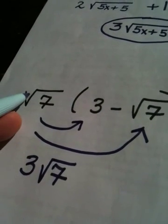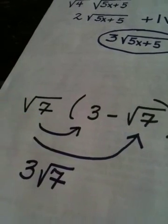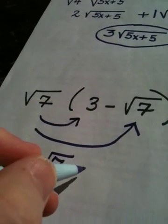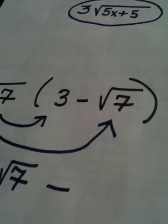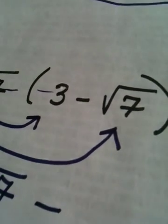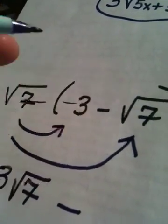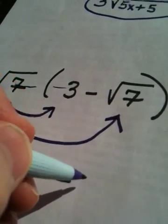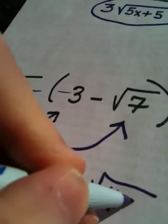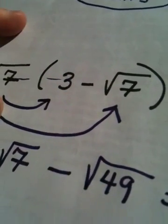Okay? The square root of 7 times 3 is 3 radical 7. A positive square root of 7 times a negative square root of 7. Positive times a negative is a negative. And when I have a square root... The wind's catching it. Here we go. Let me catch my papers. When I have a square root of 7 times a square root of 7, that becomes the square root of 49.